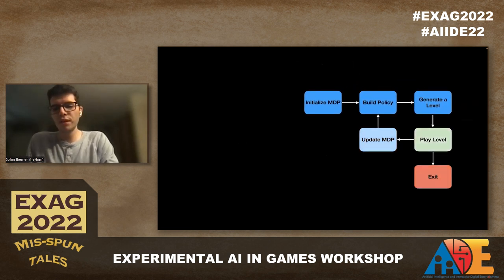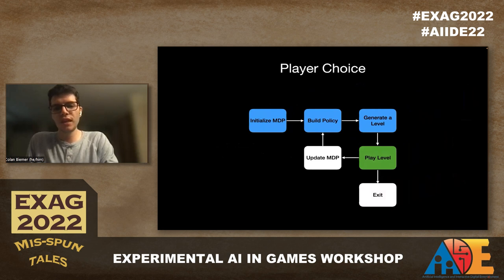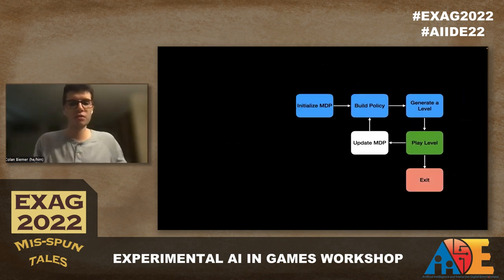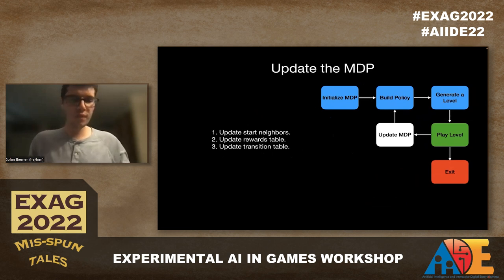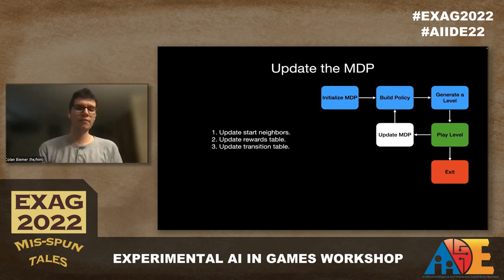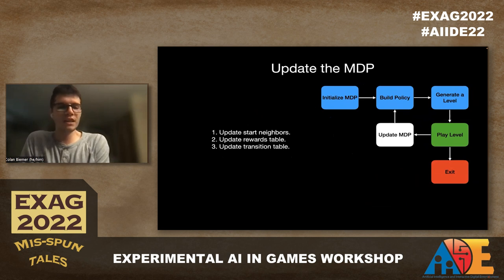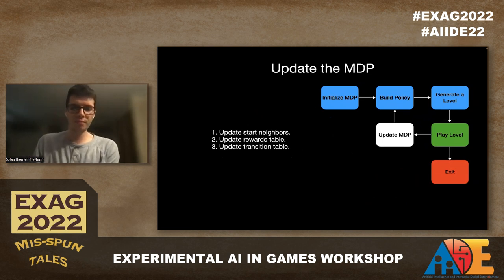At this point, the player has a choice: they can exit or choose to play again. Let's assume they decided not to quit, so we go into updating the Markov decision process. In this step, we have three things to do: update the neighbors for the start node, update the rewards table, and update the transition table.